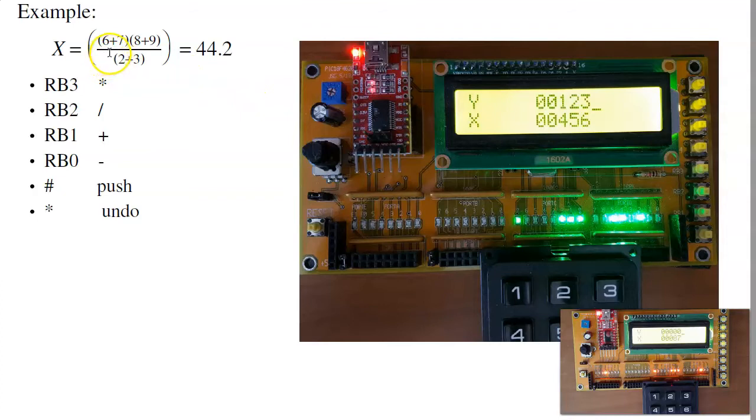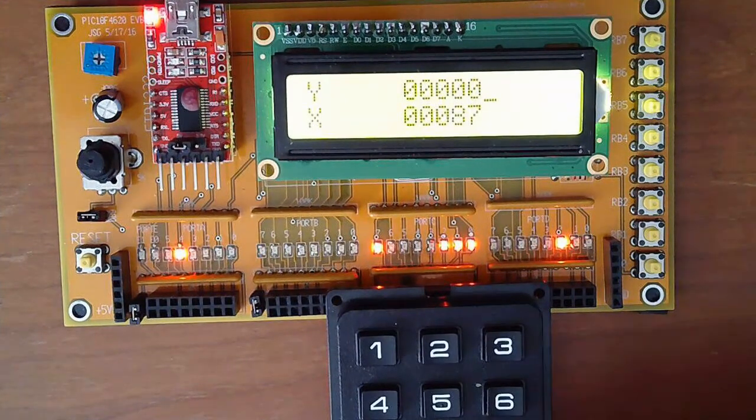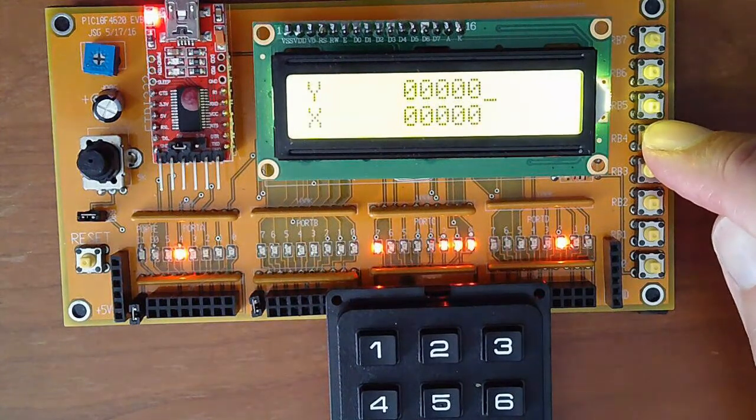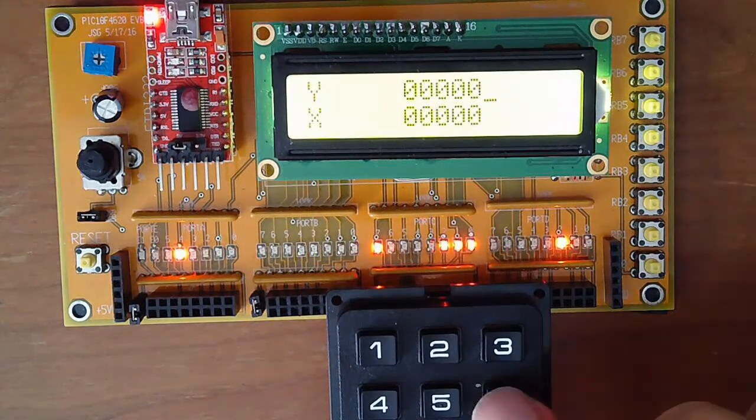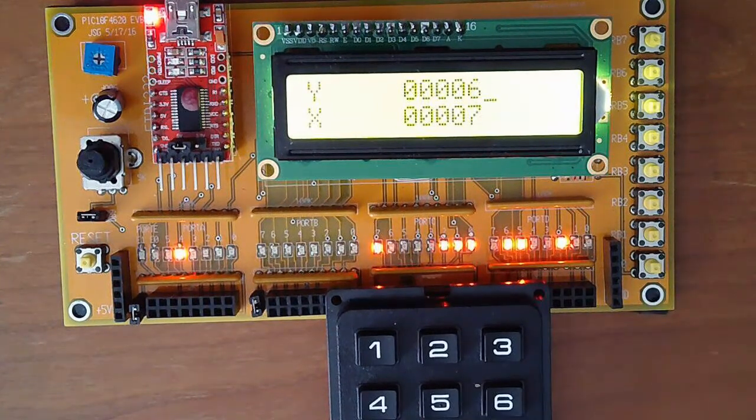To illustrate that, let's do 6 plus 7 times 8 plus 9 divided by 2 plus 3. And I should get 44.2, or integer math, 44. Trying that, I want to do 6 plus 7. So let's hit clear. Let's do 6, enter, 7. 6 and 7 are on the stack. I'll add those together.